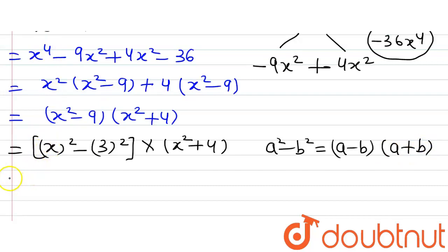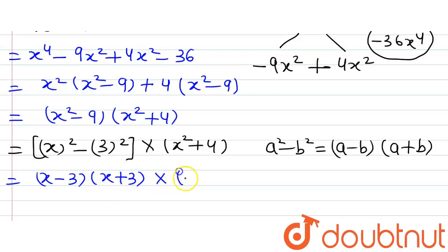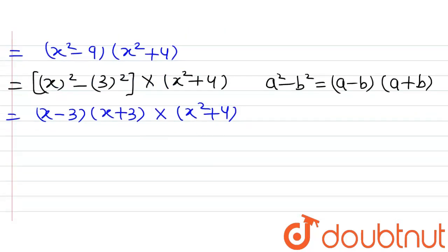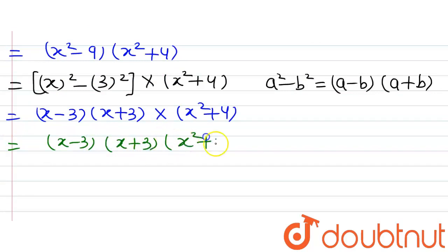Using the identity, with a equal to x and b equal to 3, we get (x minus 3)(x plus 3) multiplied by (x squared plus 4). So the final factorization of the given expression is (x minus 3)(x plus 3)(x squared plus 4). This is our final answer.